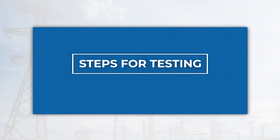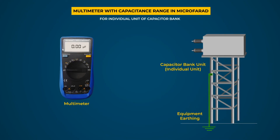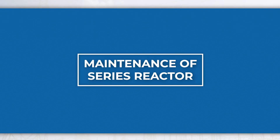To measure the capacitance of an individual capacitor unit, move the selector switch of the multimeter to the microfarad range on the capacitance marking. Connect the capacitance terminal of the multimeter to one terminal of the capacitor unit and the common terminal to the other terminal through leads. The multimeter display shows the measured capacitance value. Record the value and compare with the earlier record or recommended value; if found beyond permissible limit, investigate and rectify the issue.